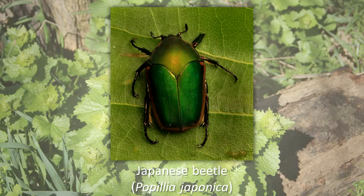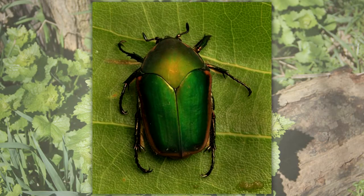Japanese Beetle. Native to Japan, it is believed that Japanese beetle larvae arrived in the United States in a shipment of iris bulbs. Adult beetles were first seen in New Jersey in 1916. The species has spread throughout much of the eastern half of the United States. More than 250 species of plants are eaten by Japanese beetles, and large infestations of beetles can be very destructive to plants.